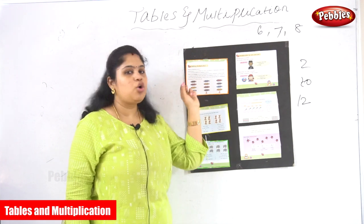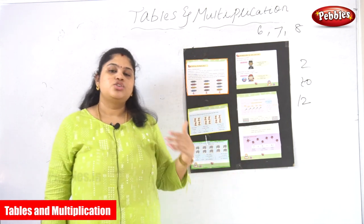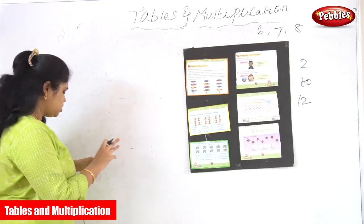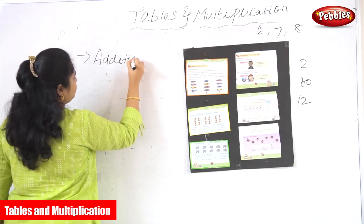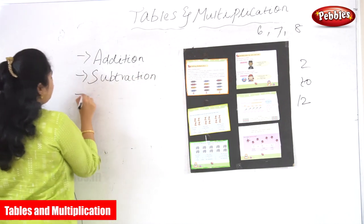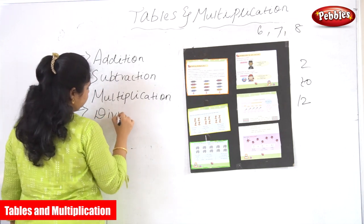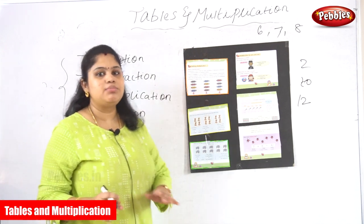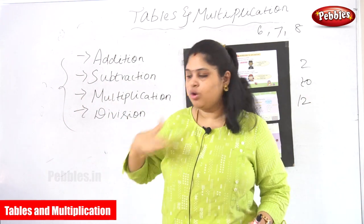Multiplication is one of the four basic operations of elementary arithmetic. Elementary arithmetic means basic calculations in mathematics. The four basic operations are: first, addition; second, subtraction; third, multiplication; and fourth, division. These are the four basic operations in elementary arithmetic, and we want to be very clear and know every basic of these four operations at our elementary level itself.